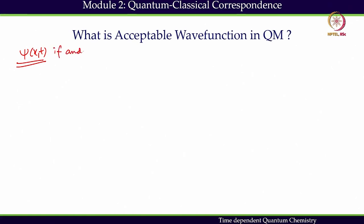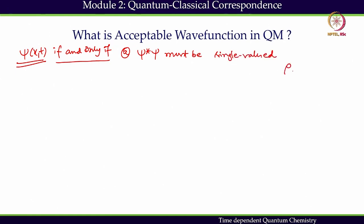First, psi-star times psi must be single-valued. This is the probability density rho. If I plot it for a particular position I should have only one value. If for this position I have two different values, it means I cannot accept the wave function. A density must be only single-valued. The wave function which gives a density with two different values for a particular position cannot be accepted.